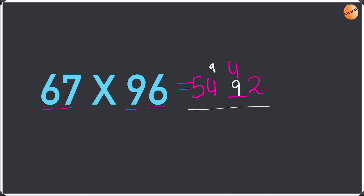Now add this up: 2, then 4 plus 9 is 13 — take the 1 as a remainder. 9 plus 1 is 10, plus 4 is 14. 5 plus 1 is 6. So the answer is 6432.